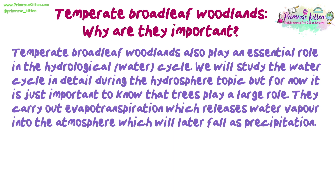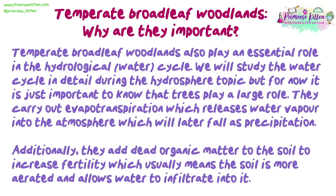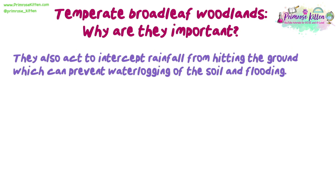Temperate broadleaf woodlands also play an essential role in the hydrological water cycle. Trees carry out evapotranspiration, which releases water vapour into the atmosphere that will later fall as precipitation. Additionally, they add dead organic matter to the soil to increase fertility, meaning the soil is more aerated and allows water to infiltrate. They also intercept rainfall from hitting the ground, which can prevent waterlogging of the soil and flooding.